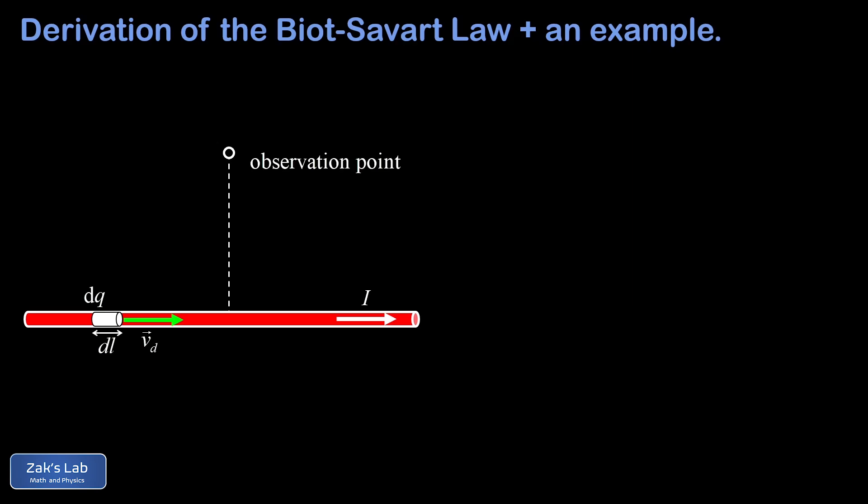We have a little dq moving at speed v_d, so we use our previous result for the magnetic field generated by a moving point charge. We label a position vector r pointing from the source charge to the observation point, making an angle theta with respect to the direction of velocity. We define a unit vector r-hat in the direction of r. The direction of the magnetic field contribution dB at the observation point is given by v crossed into r-hat — sweeping the right hand from v to r-hat, the thumb points out of the page.